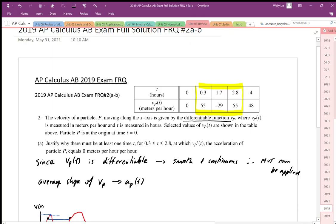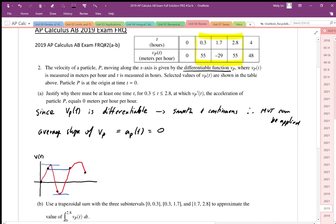If the acceleration equals zero, we can say that the instantaneous slope equals the average slope. That is the Mean Value Theorem, and it can be applied here.